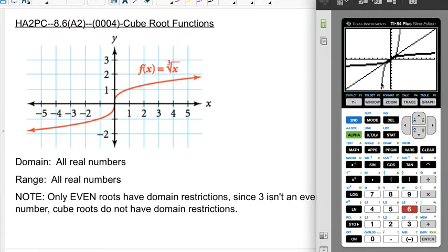So you can see that the cubic function, which is the thin line here, the thin curve. If you fold that over the line y equals x, you get the darker curve, which is the cube root function. So that's what a cube root looks like. It sort of looks like an x cubed on its side.